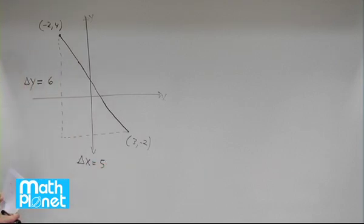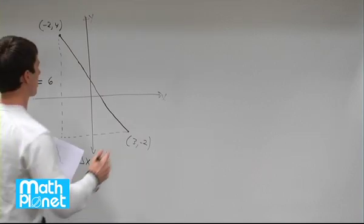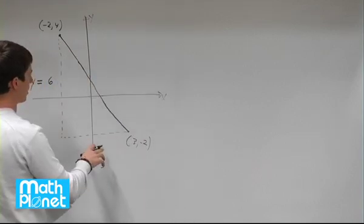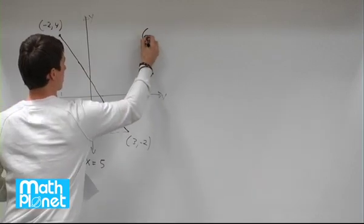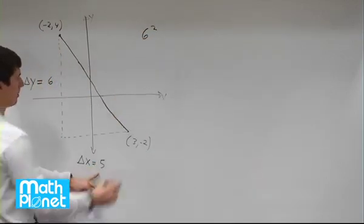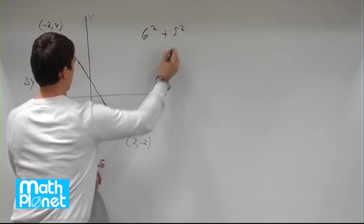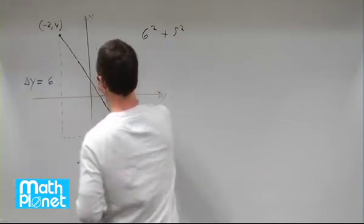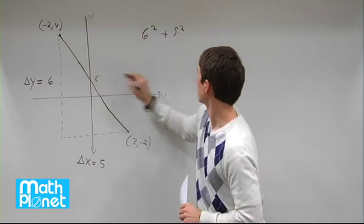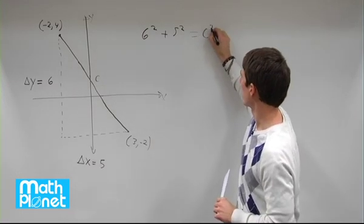So now to find this length here, we can just use Pythagoras straightforward: a squared plus b squared equals c squared. In other words, 6 squared plus 5 squared equals this length. We'll call it the total length c, so we can say equals c squared.